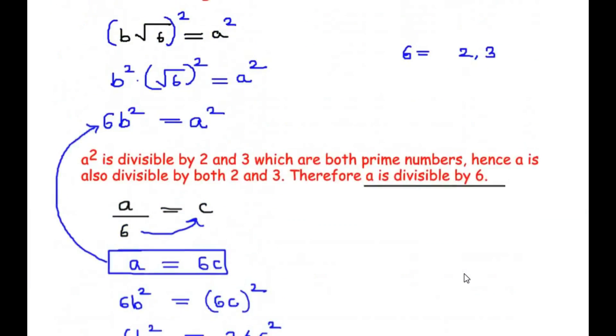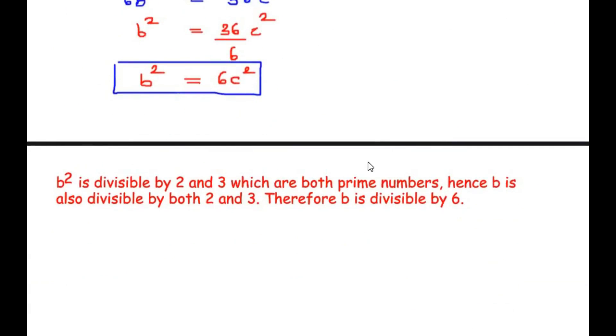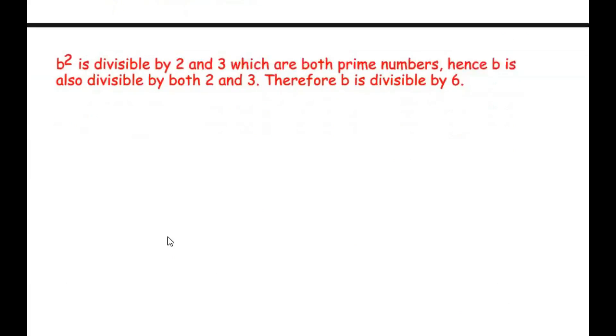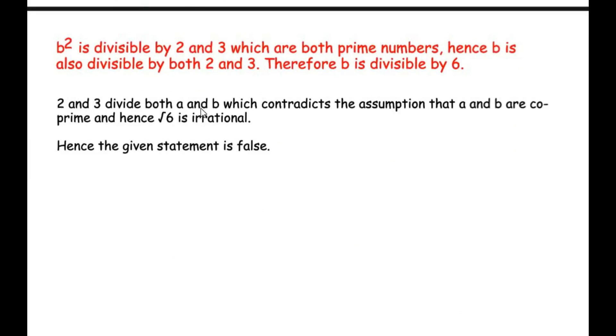Our second condition is getting contradicted, which said that a and b are co-primes, meaning the highest common factor should have been just 1, but here we are getting the highest common factor as 6. So 2 and 3 divide both a and b, which contradicts the assumption that a and b are co-primes. Hence square root of 6 is irrational, and the given statement is false.